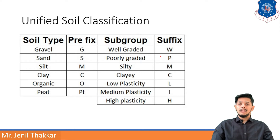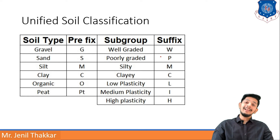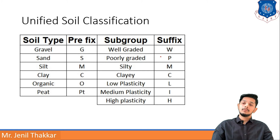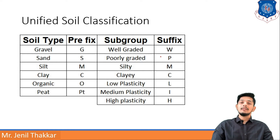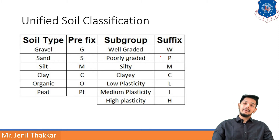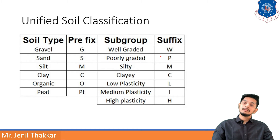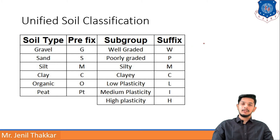For example: if it is a clay but well graded, then it will be CW. If it is a silt and it is poorly graded, then it will be MP. If it is a sand with high plasticity, then it will be SH. I hope you are clear with unified soil classification using prefixes and suffixes.